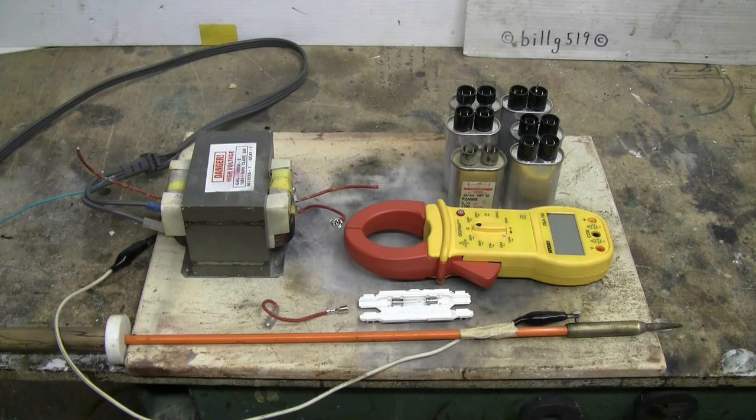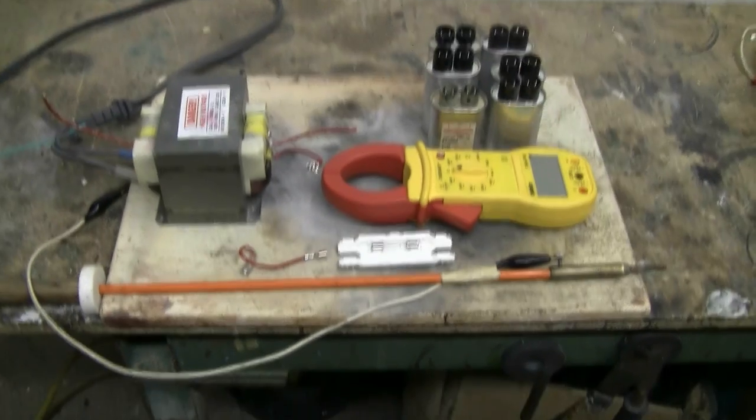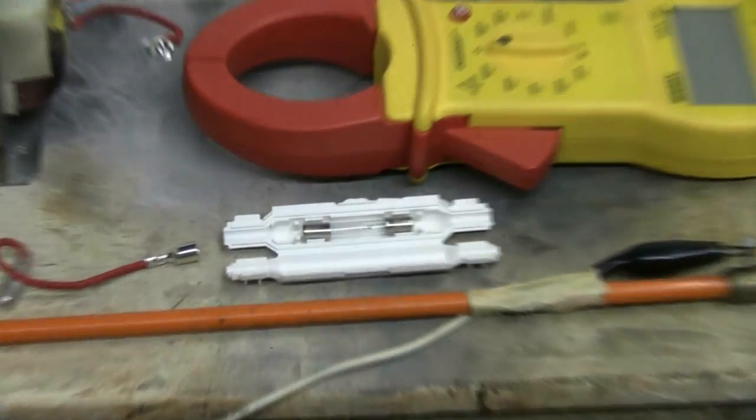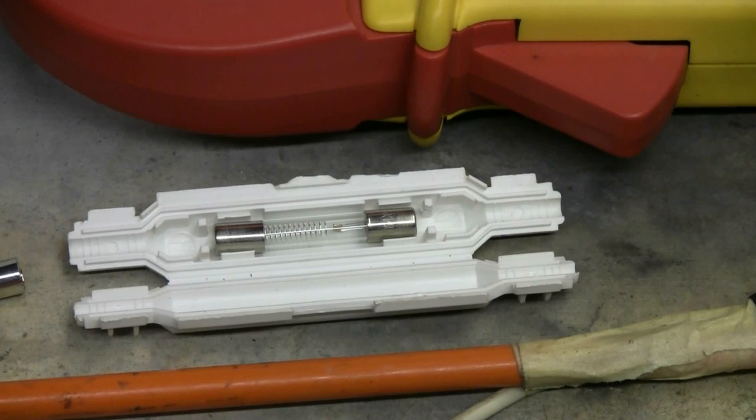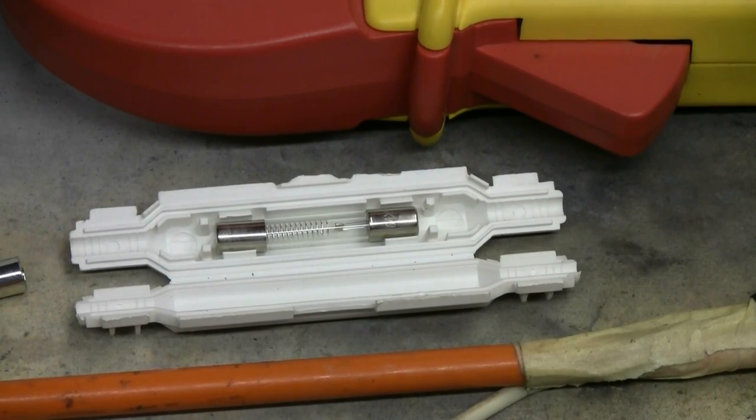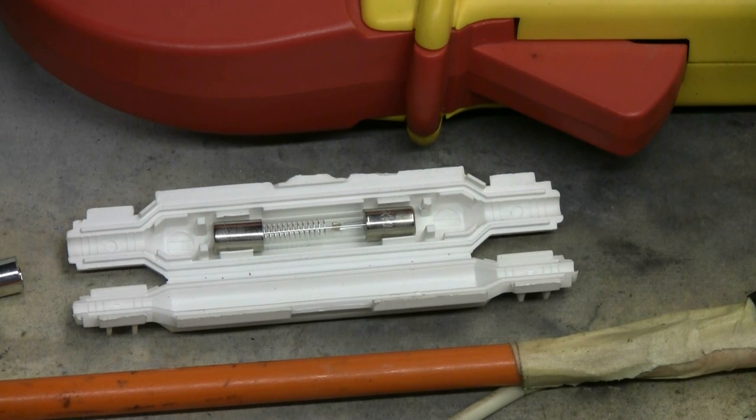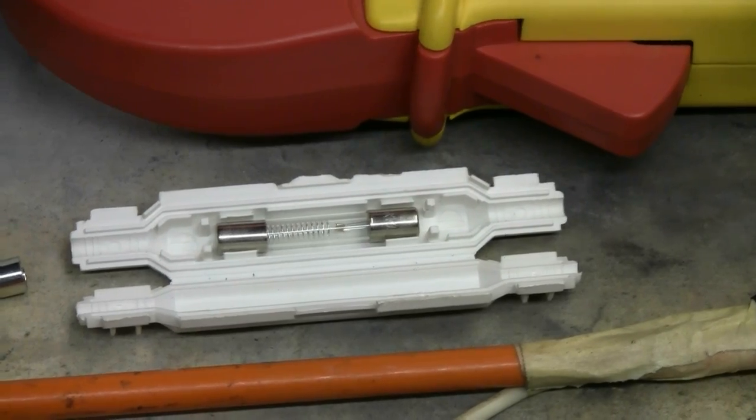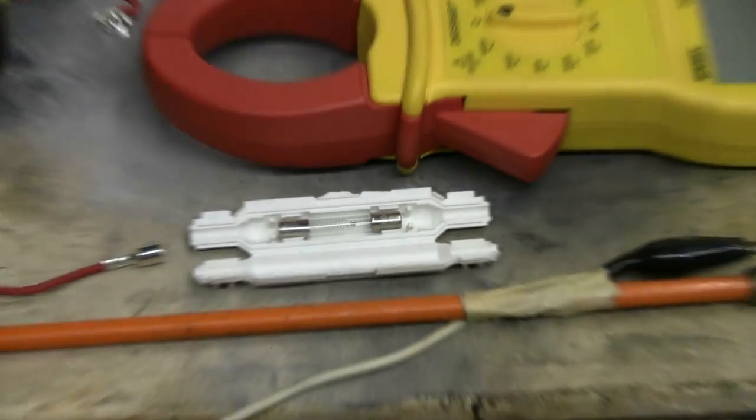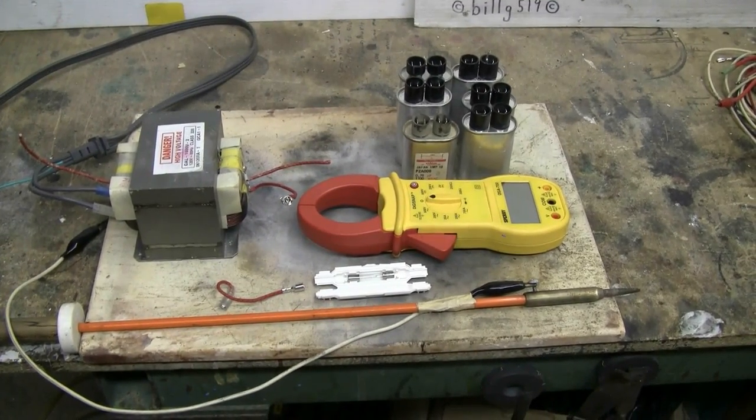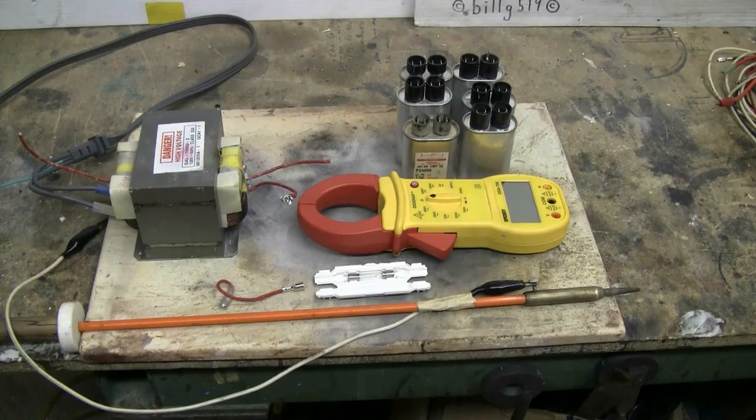Now what was interesting about this MOT is when I took it out of the microwave oven it had this fuse in there on the secondary side. That fuse that you can now see is rated 5kV 850 milliamps, so it should be a decently strong MOT that I've picked here. Anyway let's get set up and give this a try.